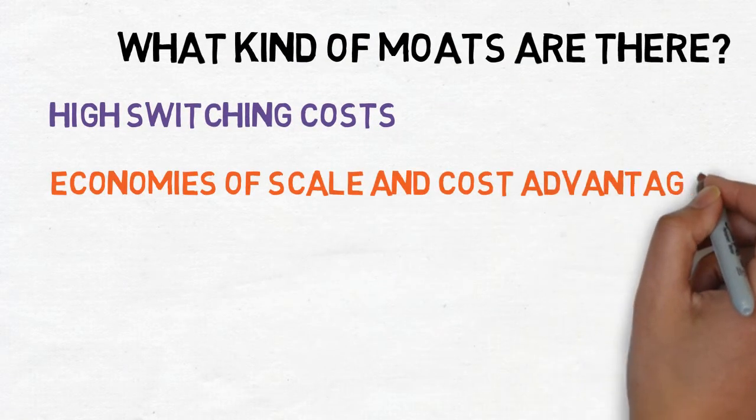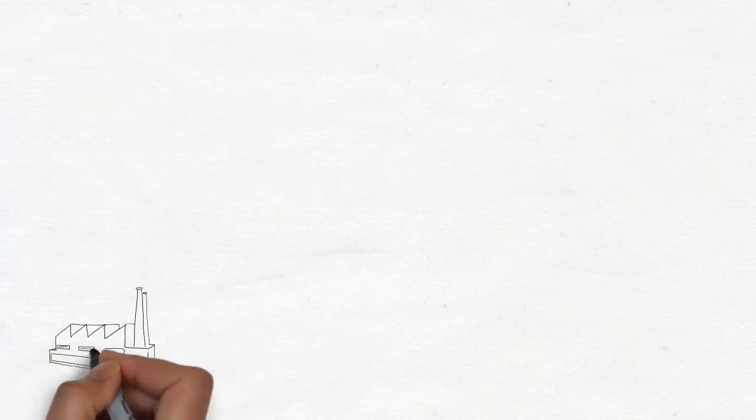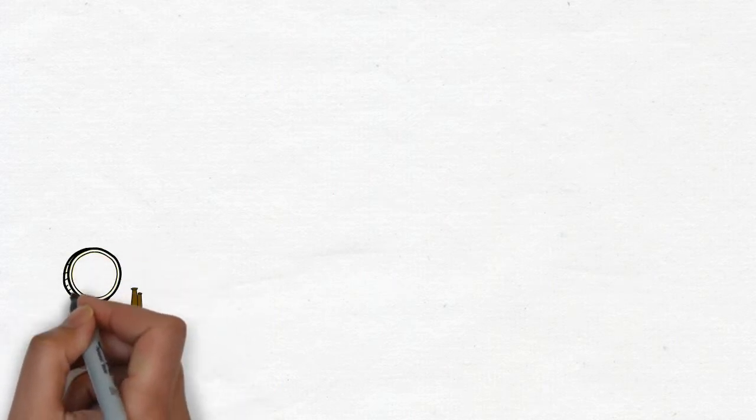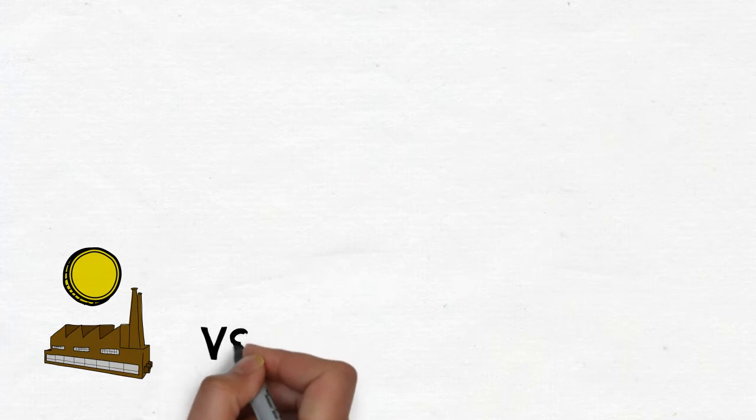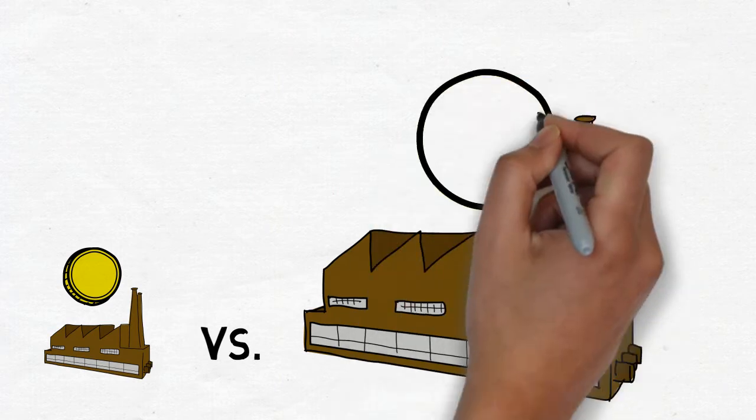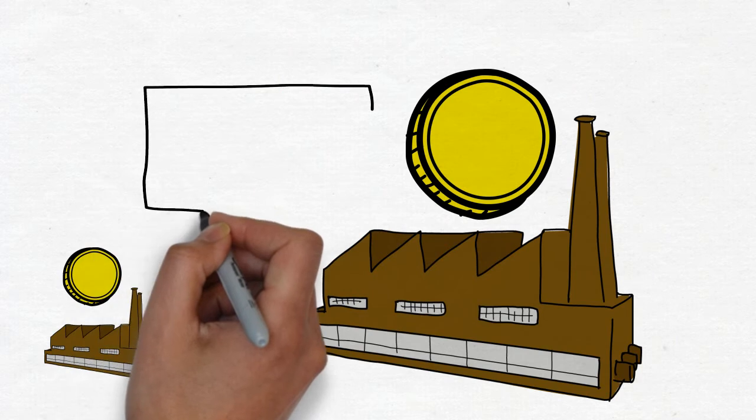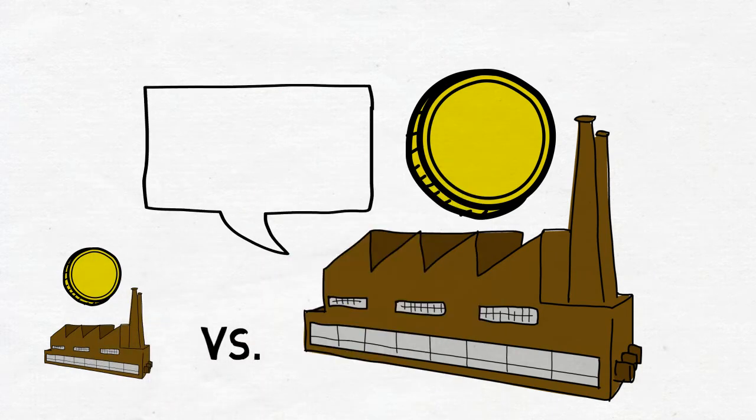Moat number two, economies of scale and cost advantages. Once a company gets big enough, it can start benefiting from economies of scale, which is a proportionate saving in costs gained by an increased level of production. It can make things for much cheaper than a new entrant could, essentially preventing them from entering the market. Another benefit from being a big company is you can start throwing your weight around and getting better deals from suppliers.